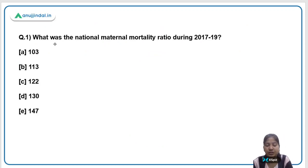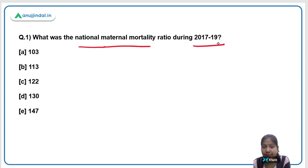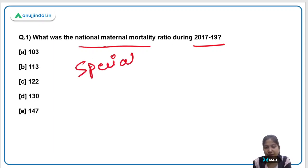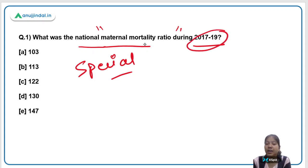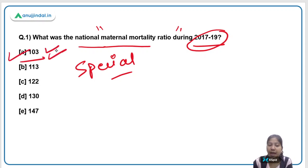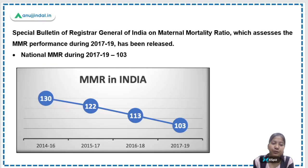Let's begin with the first question: What was the national maternal mortality ratio during 2017 to 2019? Recently, a special bulletin was released by the Registrar General of India giving maternal mortality ratio information for 2017 to 2019. The national level MMR stands at 103, which is an improvement.